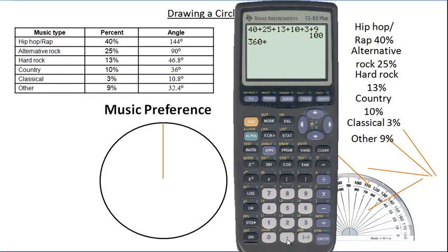If you multiply that by 40 percent, which is point 4 - if you want to put the zero afterwards you can but it's not necessary - that's what gives the 144 degrees. If we do the next one, it's 25 percent, and so that's where the 90 degrees comes from. Next one is 13 percent.